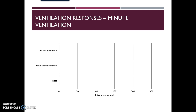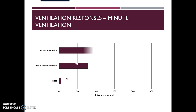Our minute ventilation goes from 6 liters per minute at rest to 78 liters per minute at sub-max exercise, to a whopping 195 liters per minute at maximal exercise.